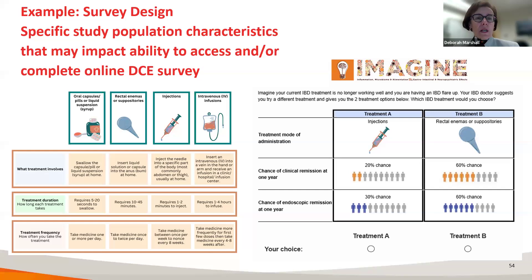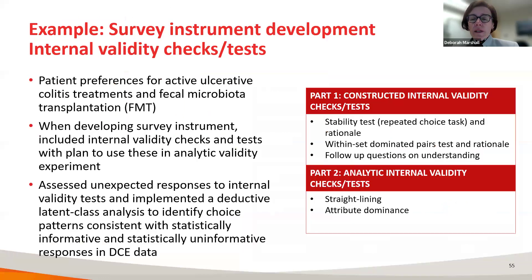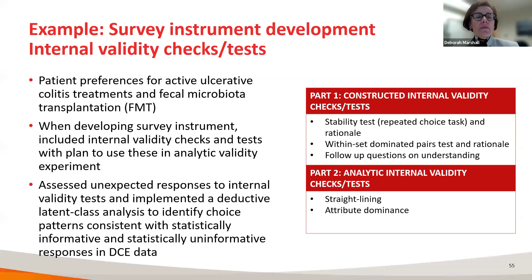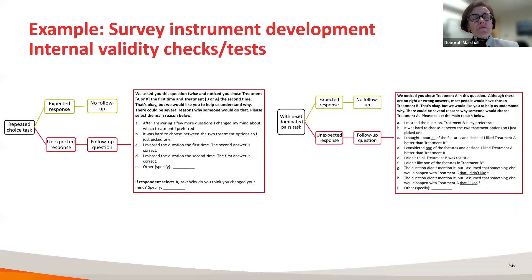Regarding internal validity checks — we build these into our surveys to the extent we can. We try to build in at least some internal validity checks and then examine quite carefully with latent class analysis to understand if this is informative or uninformative. We also do qualitative work to look at our internal validity checks — we ask understanding questions to try to understand why people made the choices they did, even if on the surface they don't seem to make sense from an internal validity check.